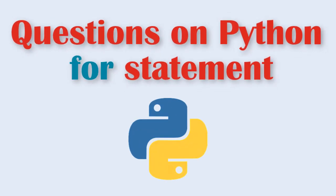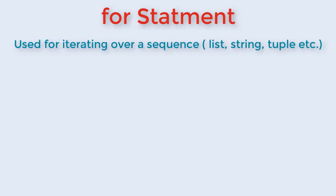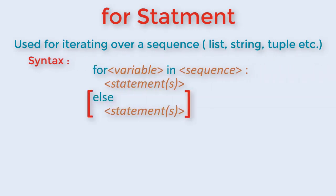Hello. In this video, we will cover some questions which are asked on Python for statement. Before we go into questions, let's do a quick revision of for loop. A for loop is used for iterating over a sequence that is either a list, string, tuple, or a dictionary, etc. The else keyword in for loop is optional and specifies a block of code to be executed when the loop is finished.